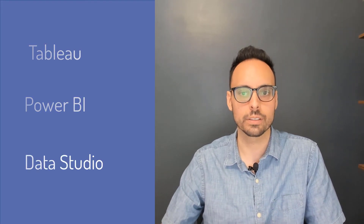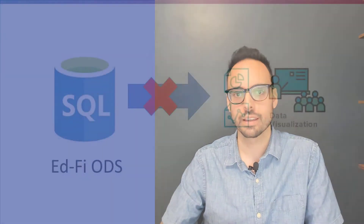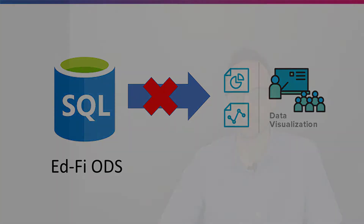Number two: your BI platform — think Tableau, Microsoft Power BI, or Google Data Studio — should not be connected straight to the ODS. This is going to lead to so much headache, as the ODS is over 500 tables and is structured for transactional processing, not analytics.